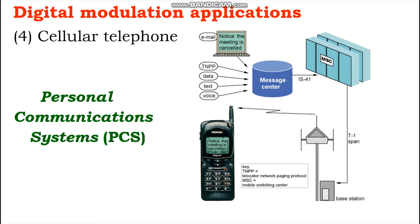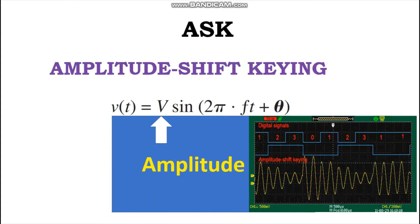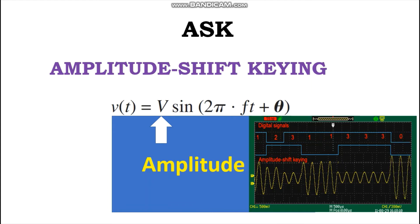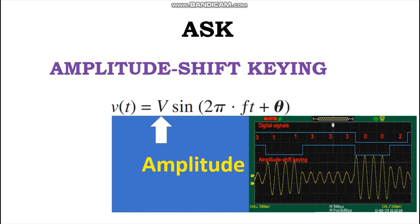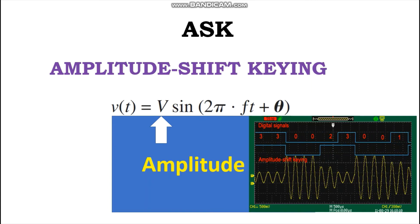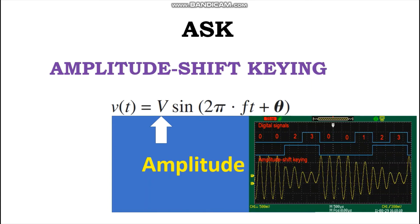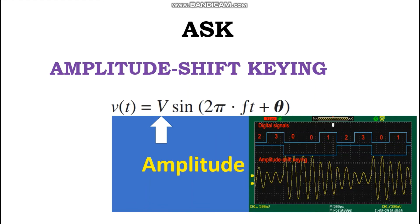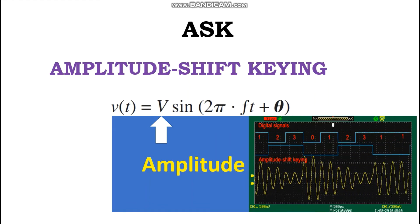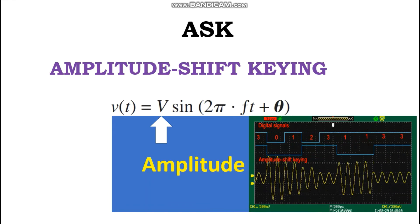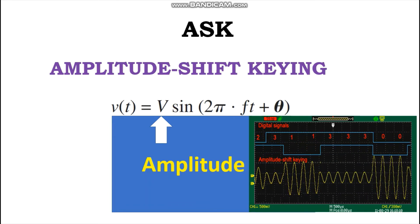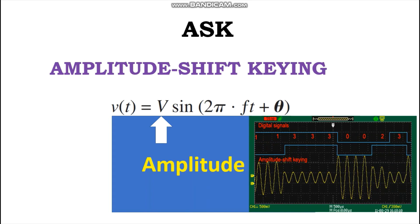Now let's look at the concept of amplitude shift keying. If the information signal is digital and the amplitude V of the carrier is varied proportional to the information signal, the digitally modulated signal is called amplitude shift keying (ASK). ASK is the simplest digital modulation technique and is also referred to as digital amplitude modulation (DAM).